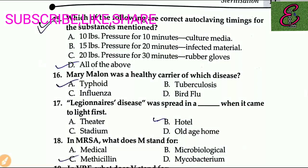Question number sixteen: Mary Melon was a healthy carrier of which disease? The right answer is typhoid.